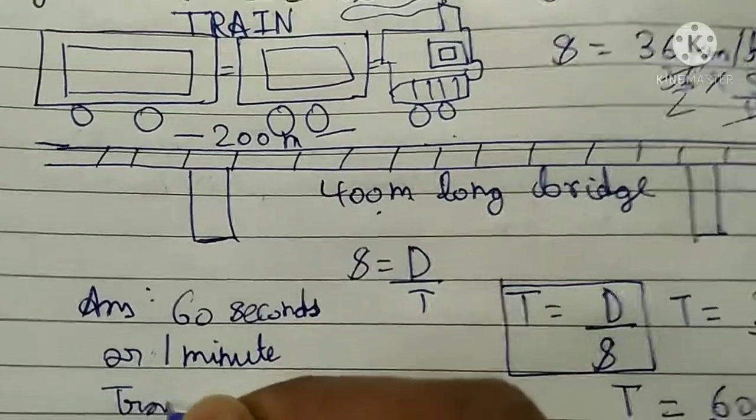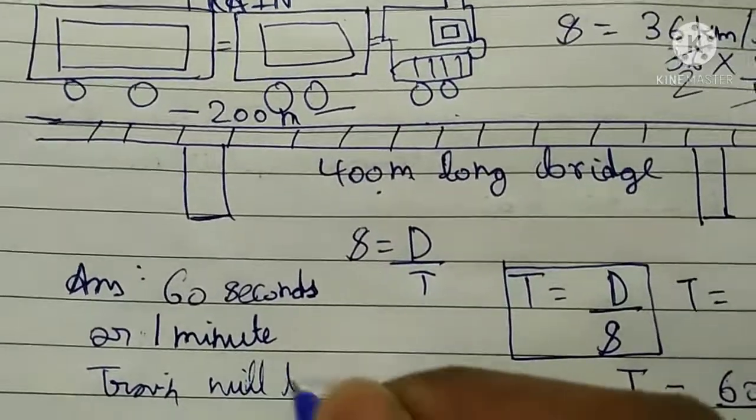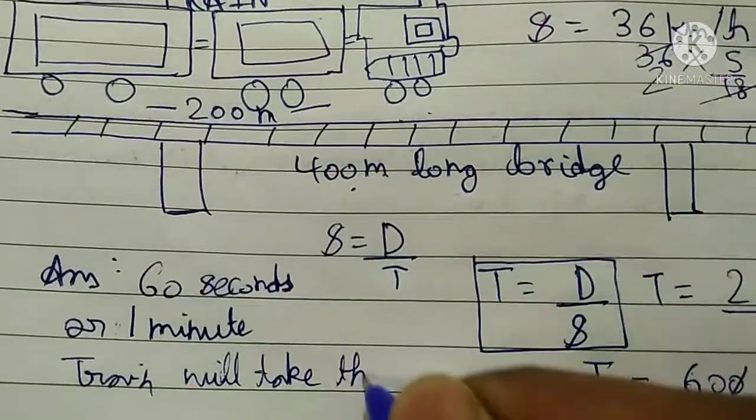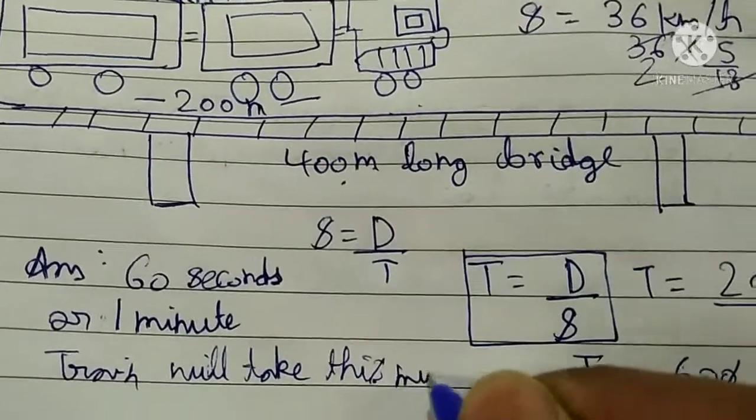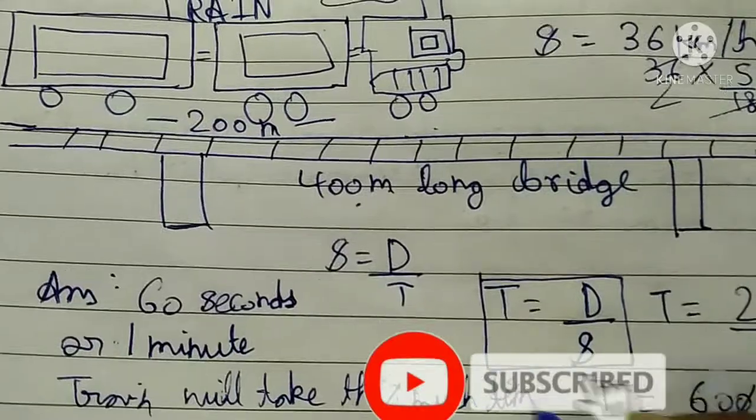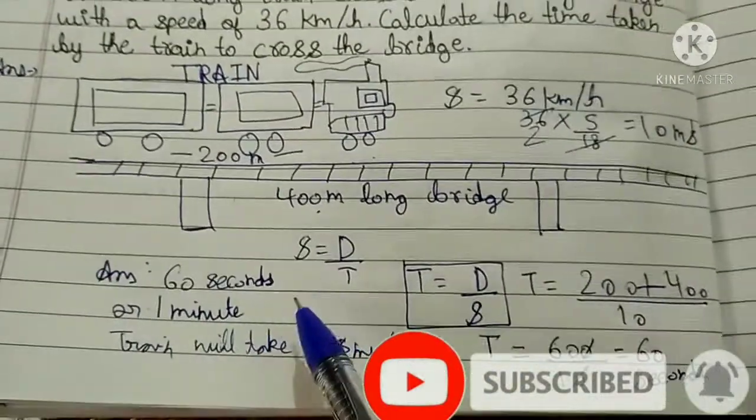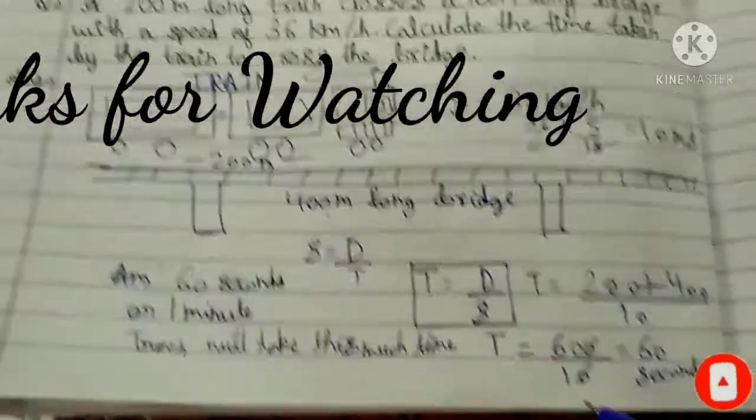The train will take this much time. So this is our answer. Train will take 60 seconds or 1 minute to cross. Thanks for watching.